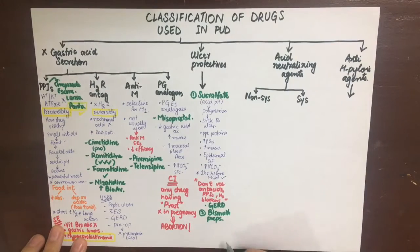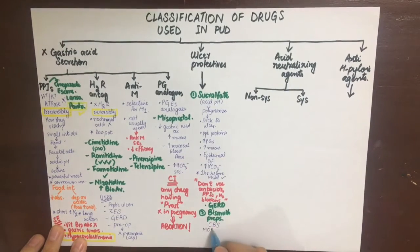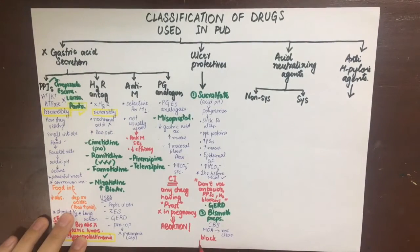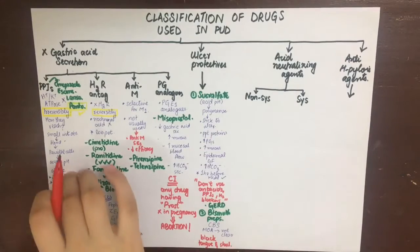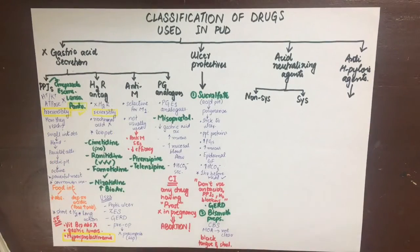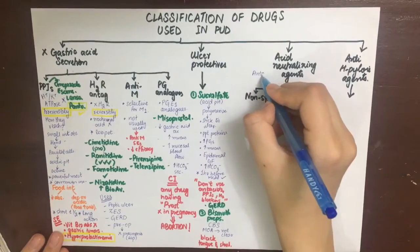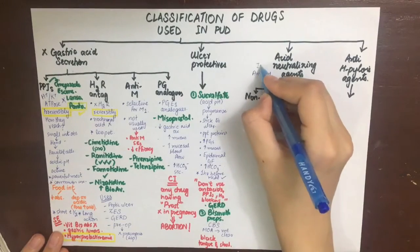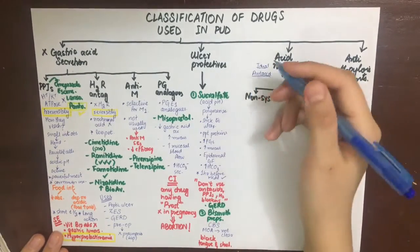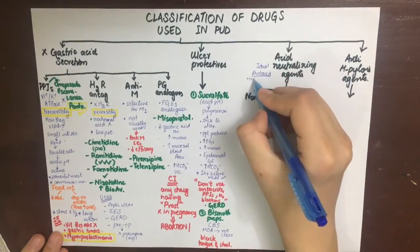Sucralfate can be used in GERD with esophagitis. The second ulcer protective agent is bismuth preparations such as bismuth subsalicylate and colloidal bismuth subcitrate. The mechanism of action is not clear, but the side effects include blackening of the tongue and stools.